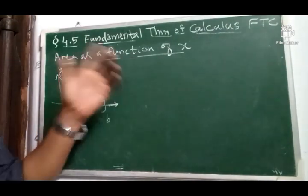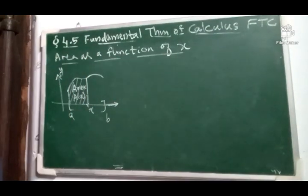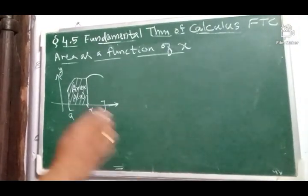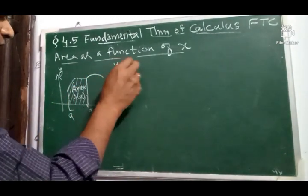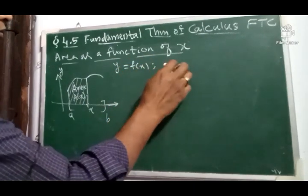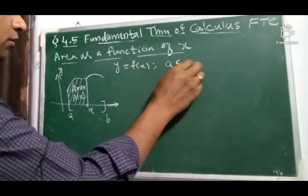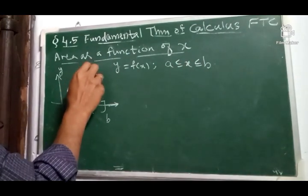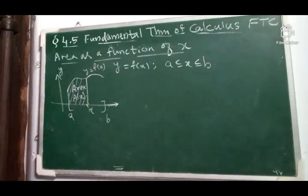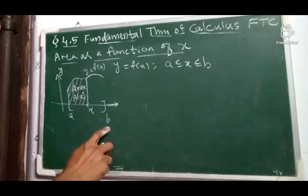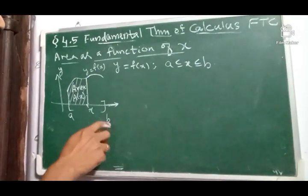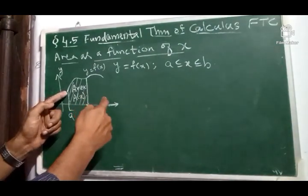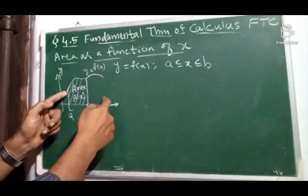Area as a function of x. Suppose you have a function y equals f(x) defined on an interval a to b, and suppose this is the graph of y equals f(x). We know integral a to b f(x)dx represents the area under this curve from here to here. That is integral a to b f(x)dx.